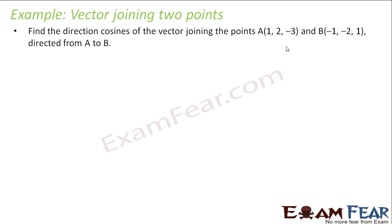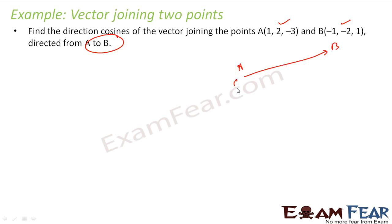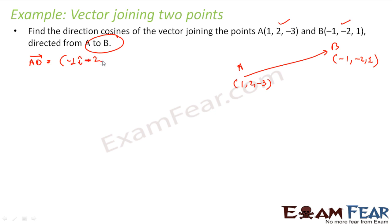We will take one more example: find the direction cosines of the vector joining point A(1, 2, −3) and B(−1, −2, 1), directed from A to B. So the direction is from A to B. Vector AB = B minus A = (−1î − 2ĵ + k̂) − (î + 2ĵ − 3k̂).